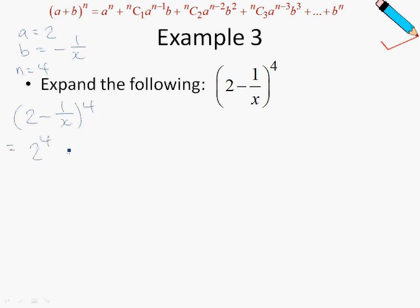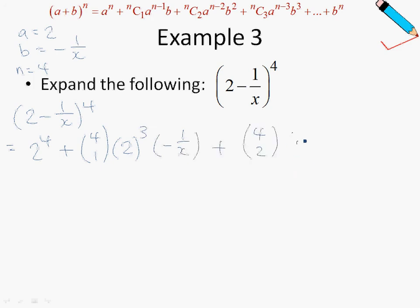So: a to the power of 4, which is 2 to the power of 4, plus 4 choose 1 — that's n choose 1 — so 4 choose 1, then 2 to the power of 4 minus 1 (power of 3), and b is negative 1 over x. Then 4 choose 2, times 2 to the power of 2, and b squared.